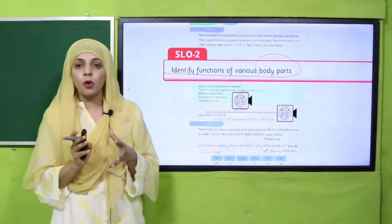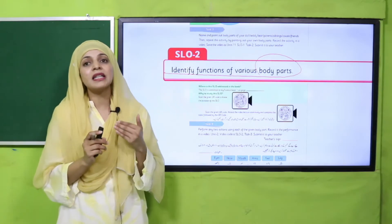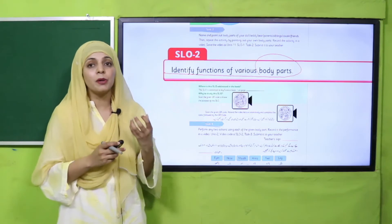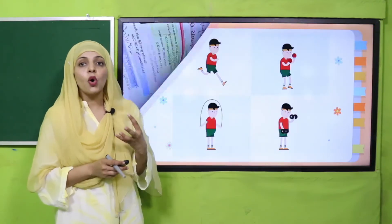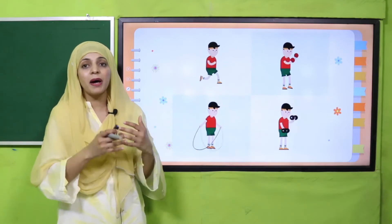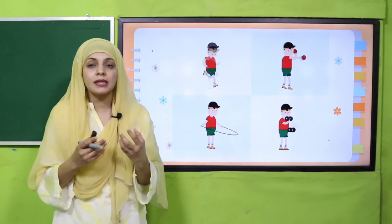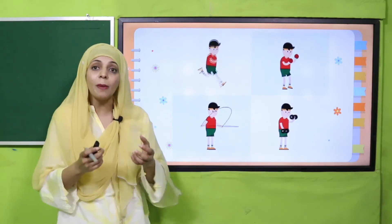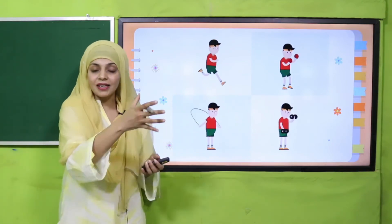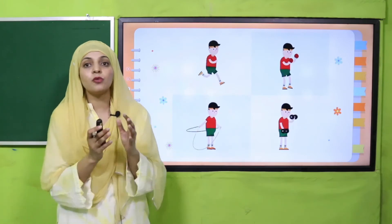As you know, we have already studied the different body parts in SLO Number 1. Now, the purpose of this SLO is to understand what functions these body parts perform. For example, you have legs, hands, arms, eyes, nose, and mouth — from all these body parts you perform different functions, like you can jump, you can write, you can shake hands, and you can lift things.